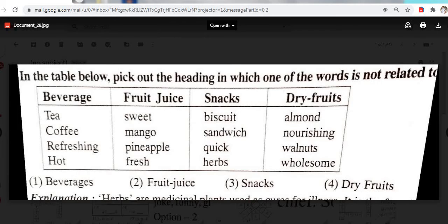Which one of the words is not related to beverages? Tea, coffee, refreshing, hot, meat. Mango, pineapple, fresh. Biscuit, sandwich, quick. Herbs, almond, nourishing, walnuts. Option 4? Dry fruits, no. These are all dry fruits. See snacks. Herbs are medicinal plants used for cure illness, and that is not come under snacks. Herbs is not a snack. Therefore, option 3, snacks is an odd man out. Snacks which refer to quick fast food.